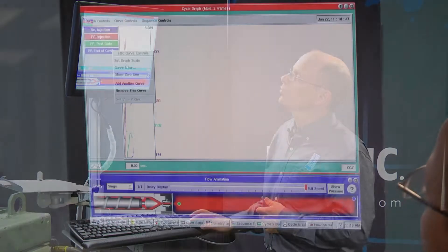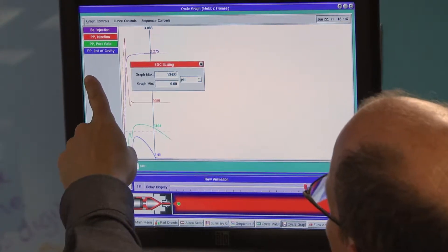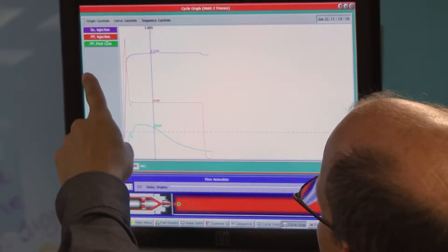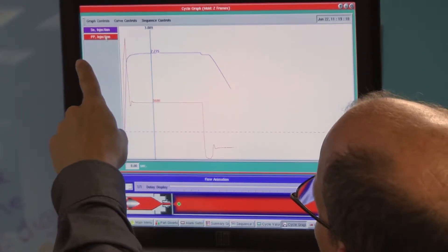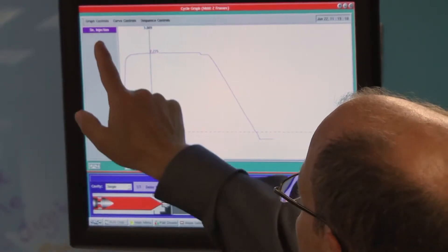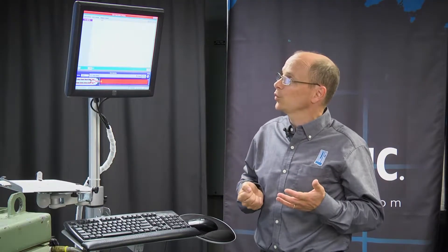So we'll start by removing all of the curves except for one. And the curve we're going to leave showing is the stroke or the screw position curve. So the stroke curve is one that many molders will recognize because it's shown on their own presses.